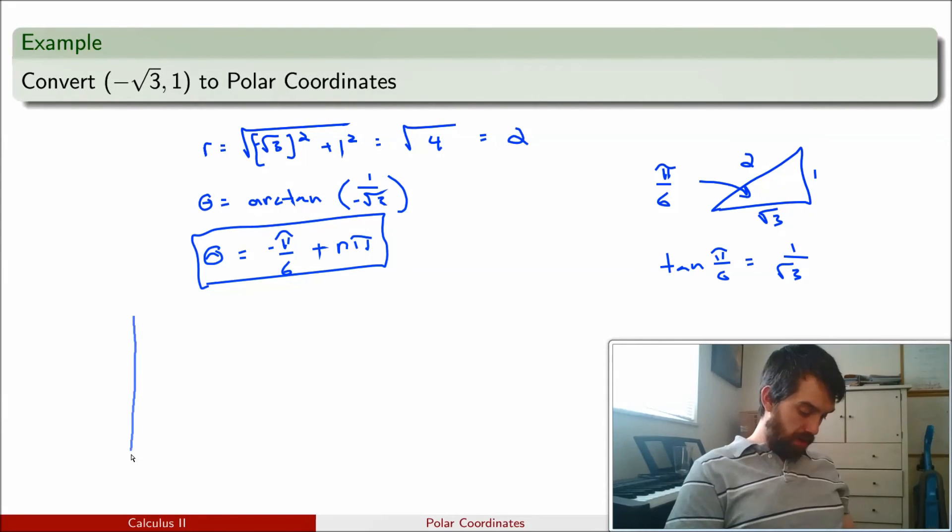So, if I think in Cartesian for a moment, and I want to figure out where this point is. So, this is like an x value of some negative number minus square root 3, which is a little bit bigger than 1, and positive 1. So, some point, something like that.